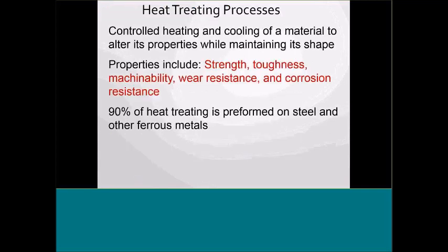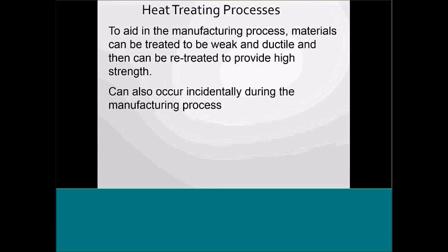Getting into heat treating — one of the things I want students to understand, which they also cover in materials technology, is that it's where we control heat and cooling of the material to alter its properties while maintaining its shape. I want them to understand the properties: strength, toughness, machinability, wear resistance, and corrosion resistance. About 90% of heat treating is performed on steel. I get into normalizing, annealing, and spheroidizing.